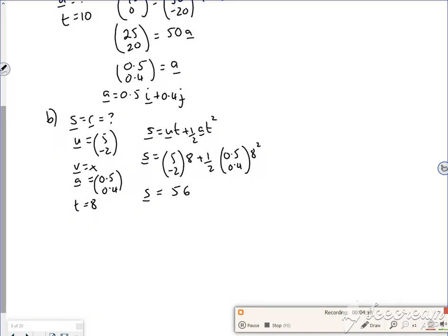And then for the bottom line, I've got minus 2 times 8 is minus 16. I've got a half of 0.4, half of the 64 is 32. And 32 times by 0.4, so if I add them together, it's minus 3.2. So s or r is 56 in the i, and minus 3.2 in the j. I'm getting towards the end of the five minutes for this one. So I'll need to do C and D in another one.